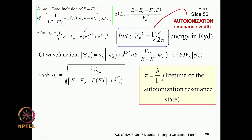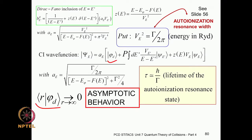The gamma here is the width of the resonance, and its reciprocal scaled by ℏ gives the lifetime of the autoionization state. Our interest, as we always emphasize in scattering theory, is in seeking asymptotic solutions — what happens as r tends to infinity — because that is where you carry out your measurements.